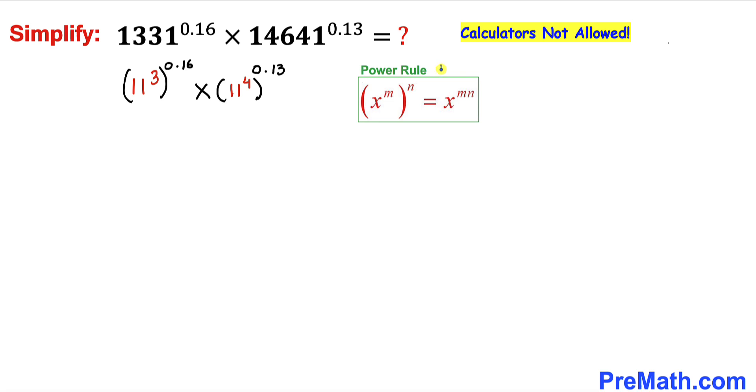And now let's recall the power rule of exponents. We are going to multiply out these nested exponents. So therefore we can write 11 power, when we multiply this thing, that's going to give us 0.48 times 11 power 0.52.